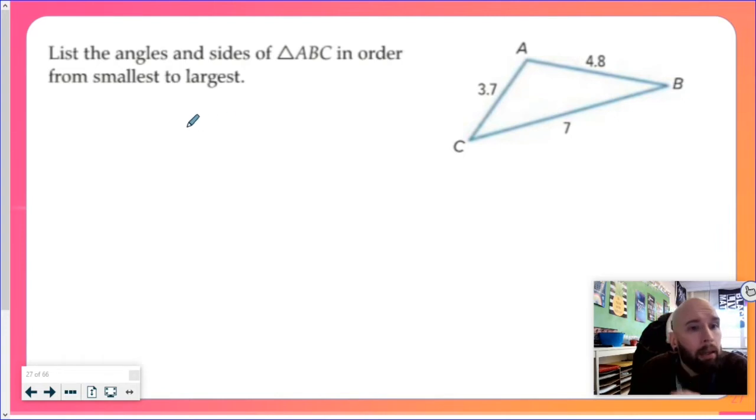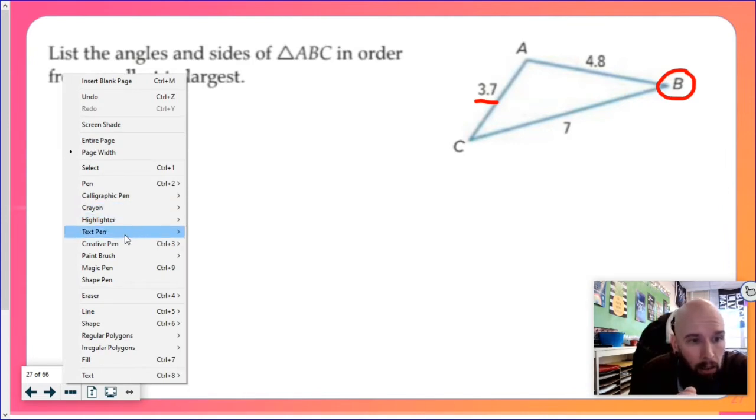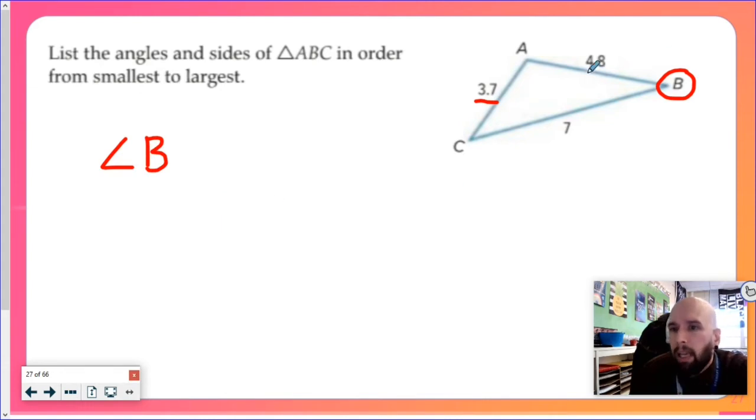So my job here is to list these from smallest to largest. That is, my smallest side, which means my smallest angle is the angle opposite of it. So my smallest angle so far is angle B. Going further, the middle side is going to be 4.8, so the angle opposite of that is angle C, which means my middle angle is angle C.